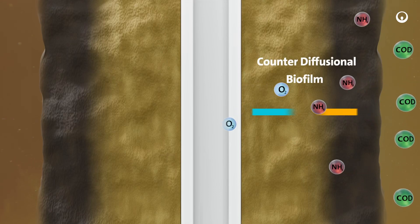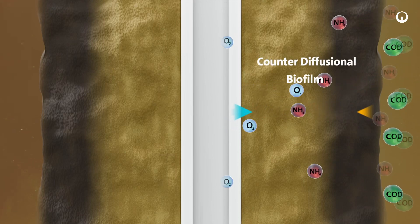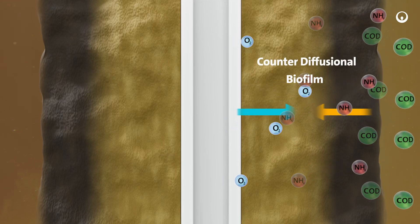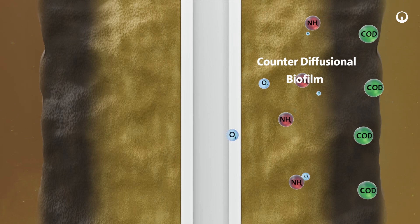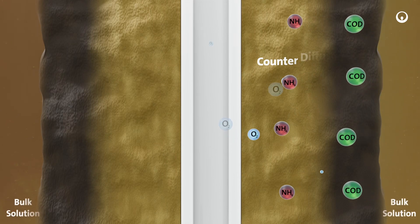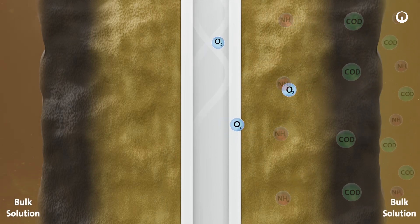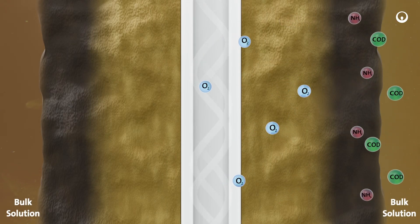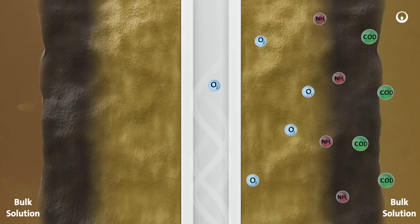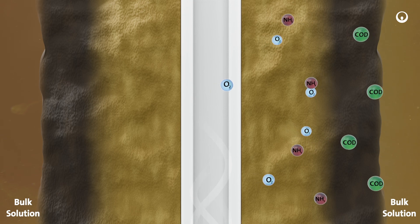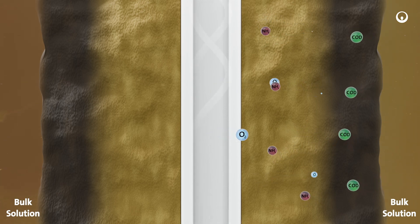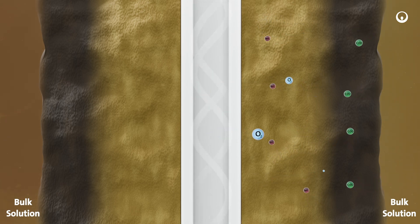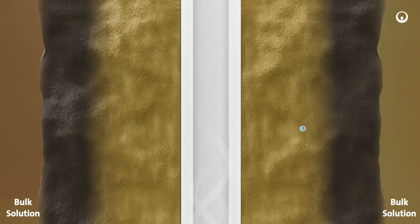Oxygen flows into the biofilm from opposite directions, forming a counter-diffusional biofilm with unique properties. The ammonia molecule is smaller than organic molecules found in wastewater and diffuses into the biofilm to reach the oxygen-rich inner layer faster than organics. As a result, the ZLUNG biofilm is supercharged with nitrifiers.